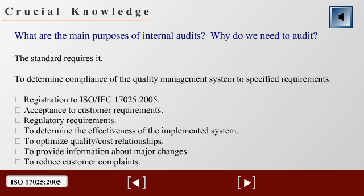What a headache! That's surely what many employees think when they hear of an approaching internal audit. But the standard requires it. The call for an internal audit is included in Section 8.2, Monitoring and Measurement. Internal audits, sometimes called first-party audits, are conducted by or on behalf of the organization itself for internal purposes and confirm the basis for an organization's self-declaration of conformity. The organization is required to conduct the audits within scheduled timeframes to ensure that the quality management system is maintained. More on this when we get to Section 8.2.